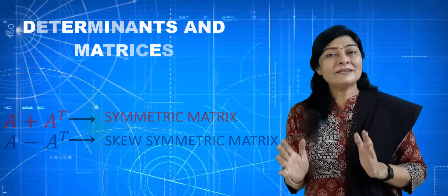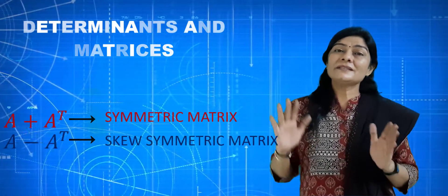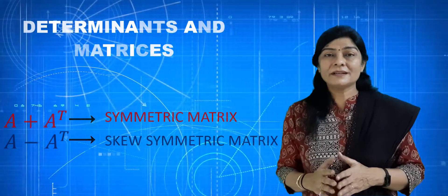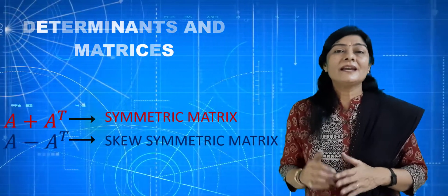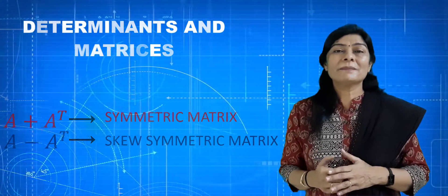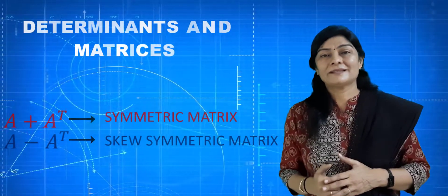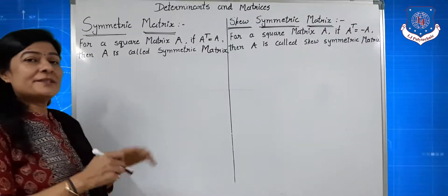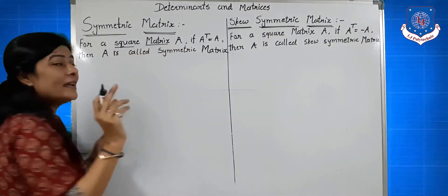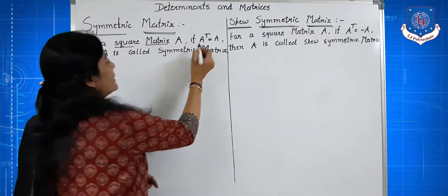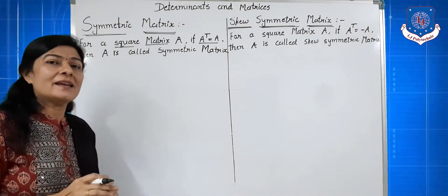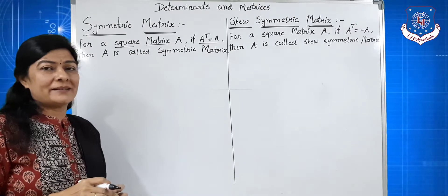For a square matrix A, if A transpose is equal to A, then matrix A is called a symmetric matrix. Also, for any square matrix A, A plus A transpose is always a symmetric matrix, and A minus A transpose is always a skew-symmetric matrix.